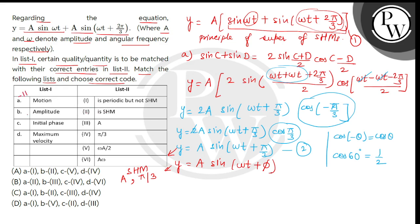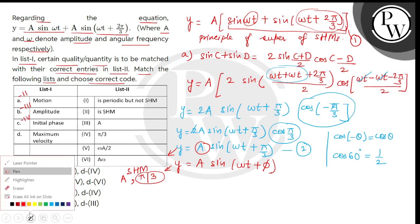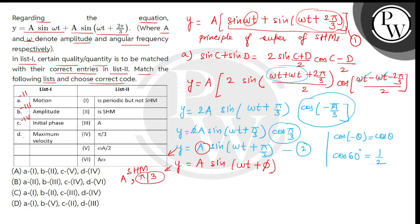Entry b में पूछा है amplitude — तो amplitude हम find कर चुके हैं, a है — तो b का answer आएगा 3. अब c में पूछा है initial phase — तो initial phase आ चुका है pi by 3 — तो c का answer आएगा 4. Entry d में पूछा है maximum velocity — तो maximum velocity express करते हैं as the product of amplitude and angular frequency — this will be a multiplied by omega — यह represented है entry number 6 में.